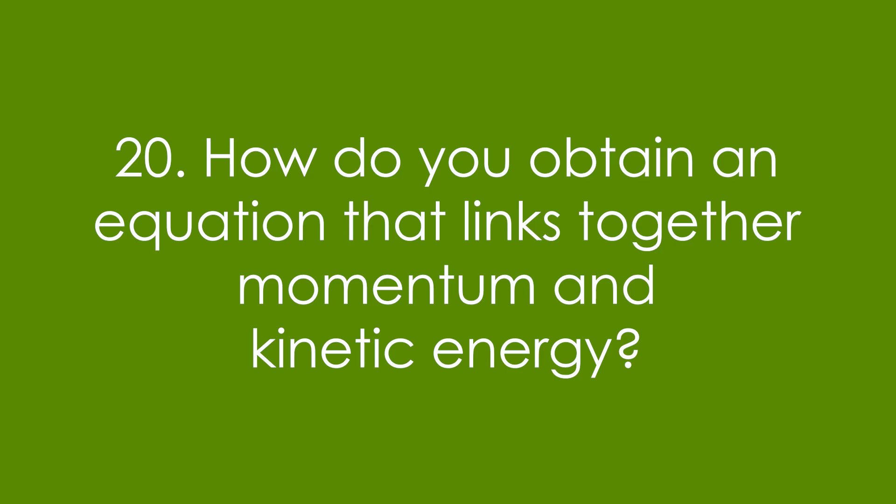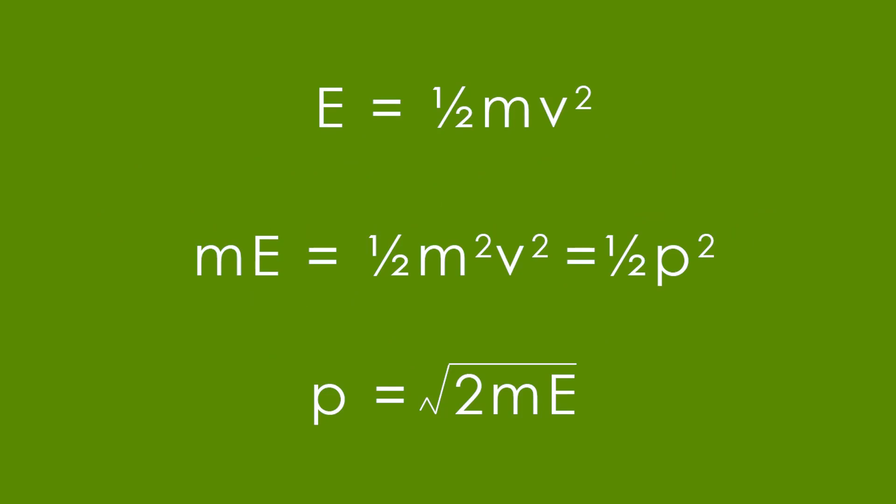Twenty, how do you obtain the equation that links together momentum and kinetic energy? Fairly tricky, people forget this one, but it's quite handy. We start off with E equals half MV squared times the whole thing by M. We end up with ME equals half P squared. Rearranging, we get P equals the square root of 2ME.